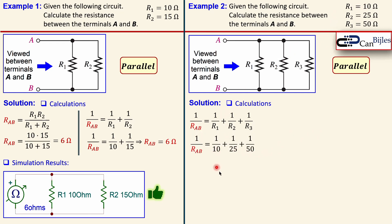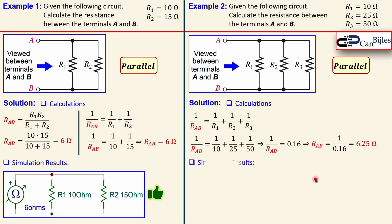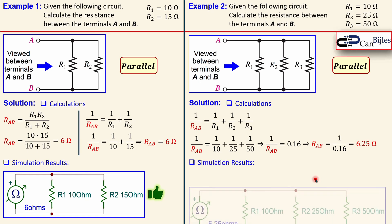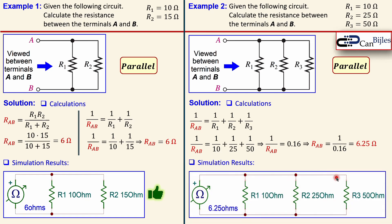Substituting the values, the right-hand side works out to exactly 0.16, so one over R_ab = 0.16, giving R_ab = 6.25 ohms. The simulation result in the SPICE simulator confirms 6.25 ohms for these three resistors in parallel — verified.